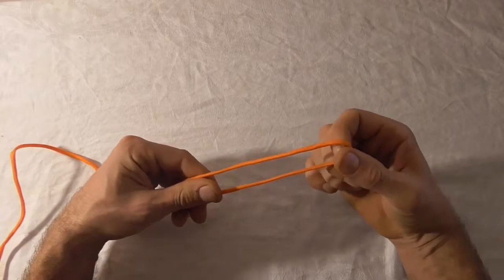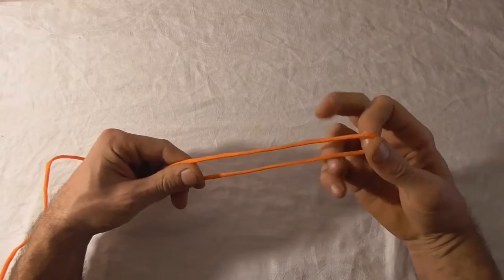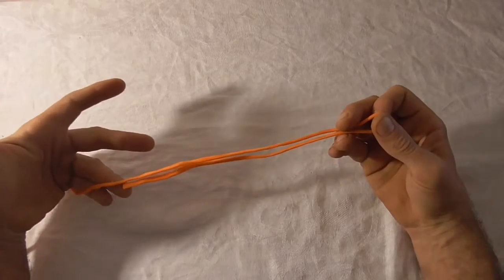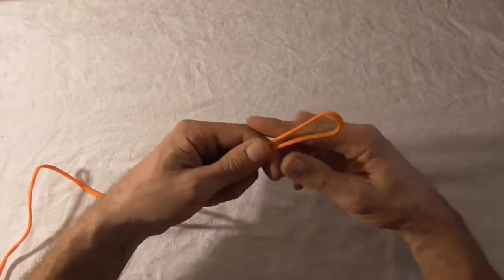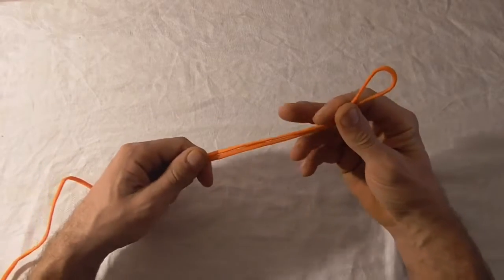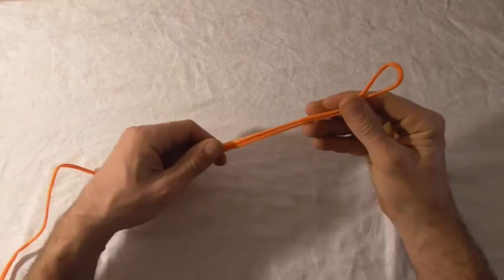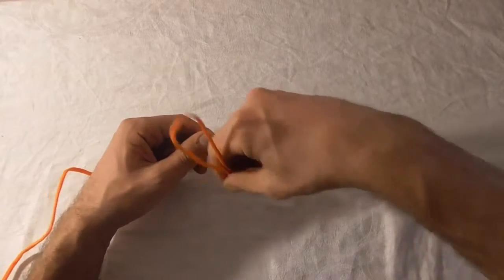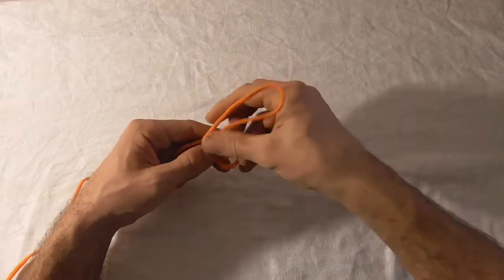To tie this knot, we'll put a bite in our line just like that, and then we'll use this as if it was one strand of line and put an overhand loop.